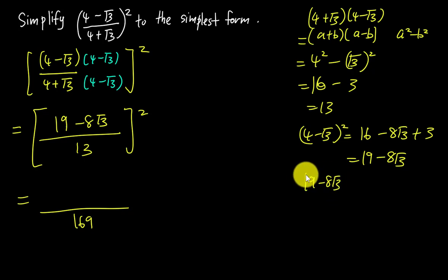First is 19², which gives us 361. Then minus the middle term: 2 × 19 × 8√3, which is 304√3. Last one is squaring the 8 to get 64, and squaring √3 to get 3, so 64 × 3 equals 192.